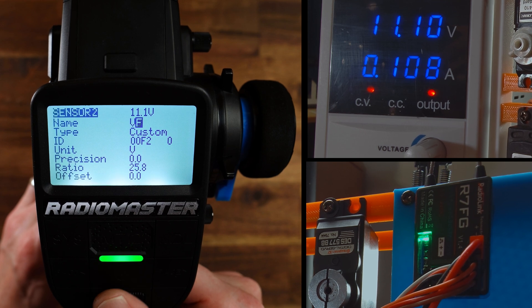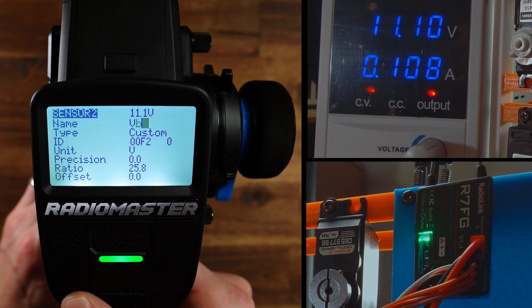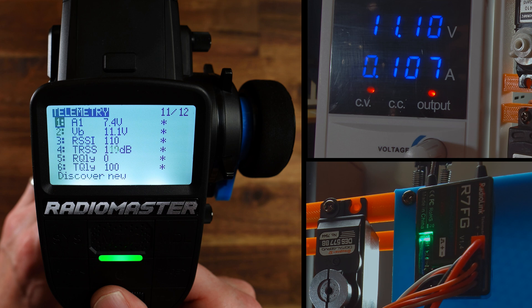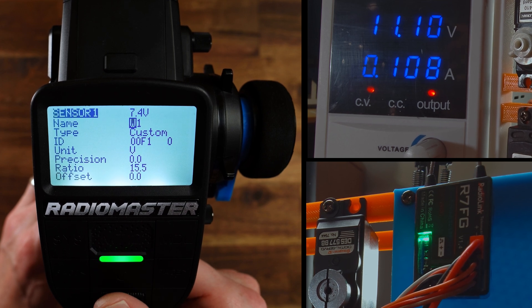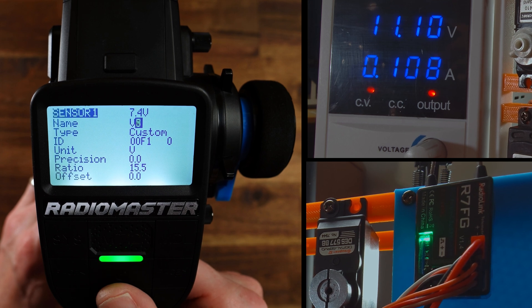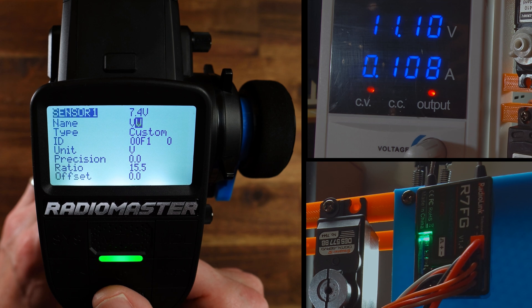And while we are here I rename this sensor to VB for voltage battery. A little b, VB for ESC. Yes, that's it. And the first sensor I rename to VE for ESC, which is the BEC voltage.